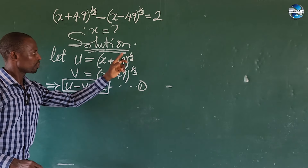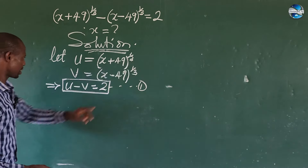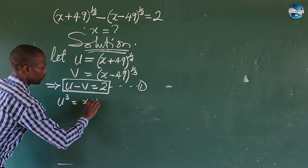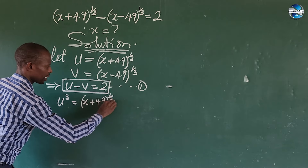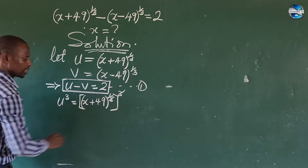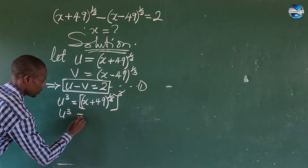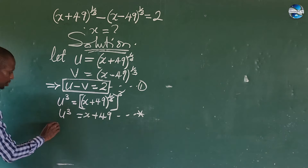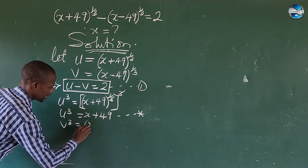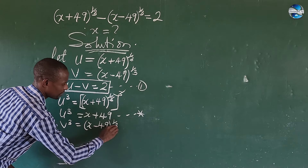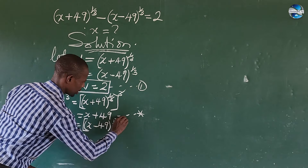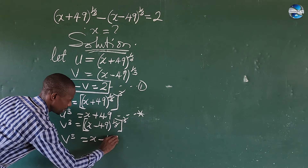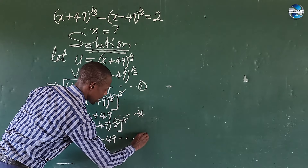From equation 1, we can remove the radical by cubing both sides. Rewriting: u³ equals x + 49. Now similarly, for v: v³ equals (x - 49)^(1/3) cubed, which gives us v³ equals x minus 49. Let's call this equation star-star.